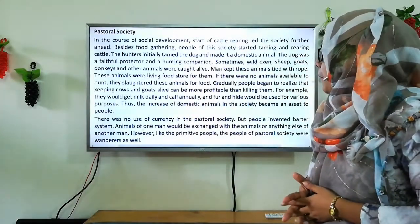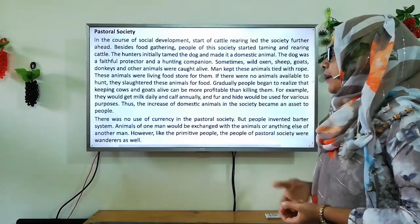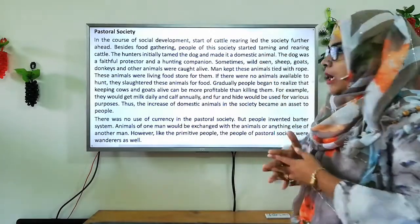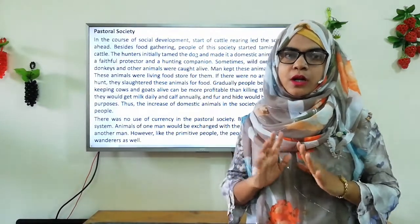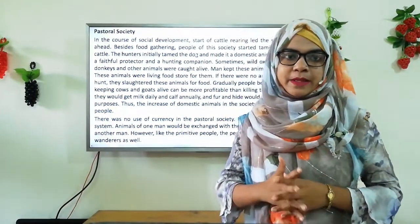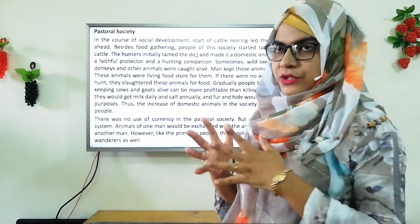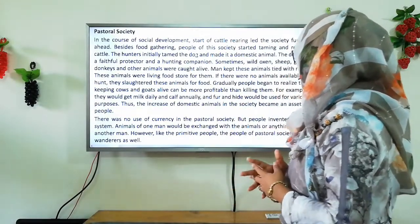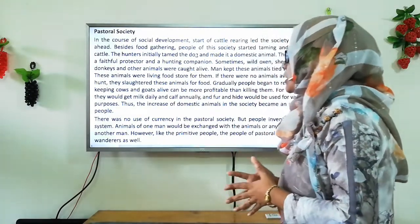In the course of social development, the start of cattle rearing led society further ahead. Besides food gathering, people of the society started taming and rearing cattle. Animal taming belongs to pastoral society. The hunters initially tamed the dog and made it a domestic animal. The dog was a faithful protector and a hunting companion. Sometimes goats, donkeys, and other animals were caught alive. Man kept these animals tied with rope, so these animals became a living food store for them. If there were no animals available to hunt, they slaughtered these animals for food.